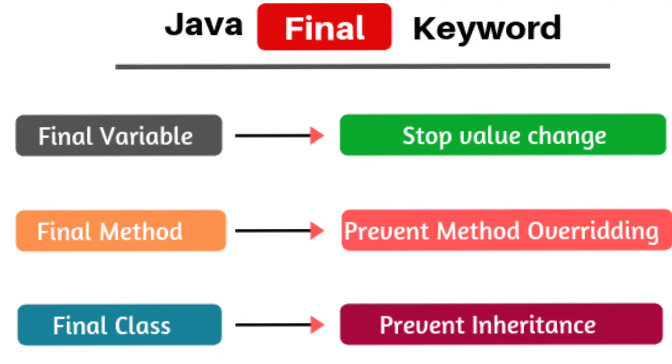The second difference is a final keyword can be used in three areas. It can be used for variables, it can be used for methods, and it can be used for classes. If you use the final keyword for variables, then that value cannot be modified. If you use the final keyword for methods, that method cannot be overridden. If you use a final keyword for a class, then we cannot inherit. So the main properties of OOP — inheritance and polymorphism — cannot be done if you use the final keyword.